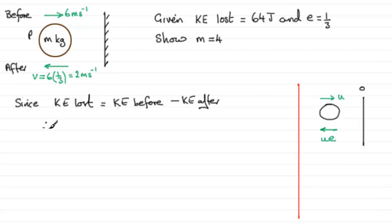we can make up an equation now because the kinetic energy lost we know is 64 joules and kinetic energy before well kinetic energy just generally is a half MV squared so it'd be a half M times V squared being the initial speed here so that'd be six squared minus half M times the speed after impact so that'd be two and it's two squared